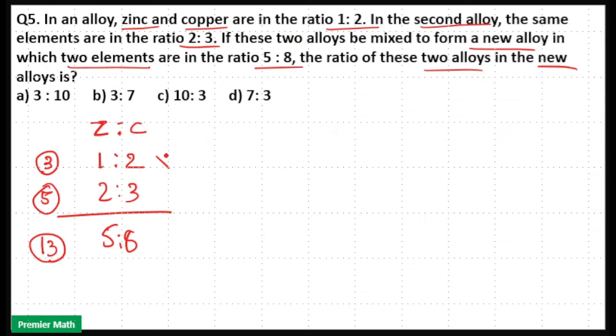To equalize it, multiply 1:2 with 5 into 13, multiply 2:3 with 3 into 13, multiply 5:8 with 3 into 5.